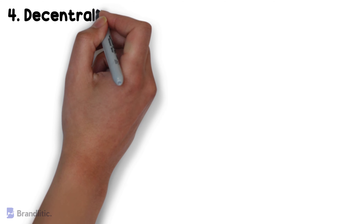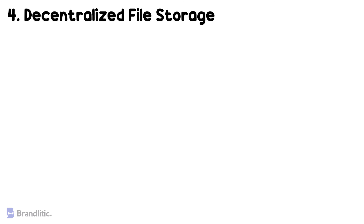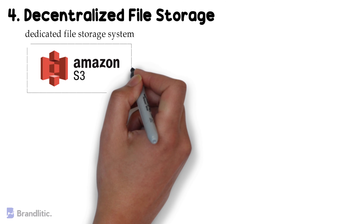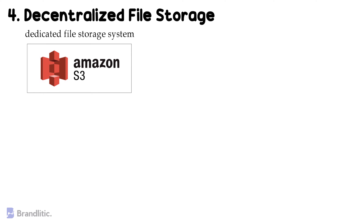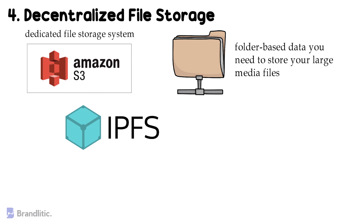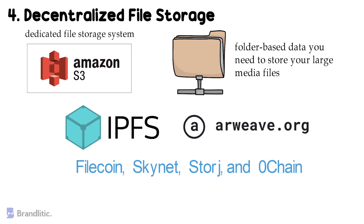Tech stack component #4: Decentralized File Storage. Like every other application, we need a dedicated file storage system similar to Amazon S3 for Web2. Databases are essentially tabular data, while file storage is folder-based data for large media files. In Web3, we majorly employ IPFS, the most common P2P file system protocol with excellent community support. Arweave is another option focused on keeping data permanently. Platforms like Filecoin, Skynet, and Storj can be used to host these file storage systems.